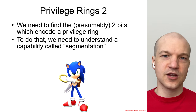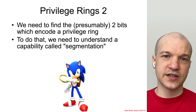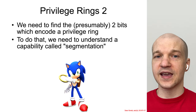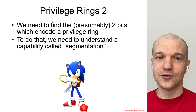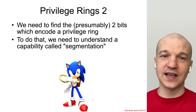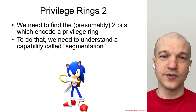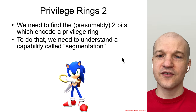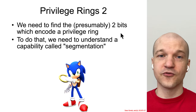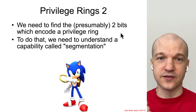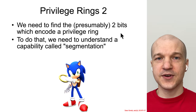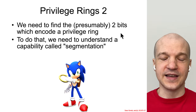In order to fully understand privilege rings, we're going to have to take a large and lengthy detour through a technology called segmentation. In doing so, we will find the two bits which encode the four ring levels — 0, 1, 2, and 3. Let's go ahead and dig into that now.